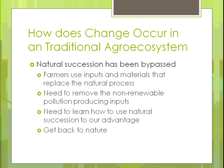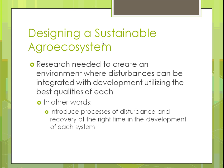Natural succession has been bypassed — we're going in there and creating the interferences. One example is farmers putting inputs like fertilizers, pesticides, and herbicides that change the organisms present, whereas the natural process would have taken care of anything that wasn't beneficial. They need to remove non-renewable, pollution-producing inputs such as mechanized equipment and learn to use natural succession to our advantage — go back to nature — because as we've already talked about in earlier chapters, it's not really working.